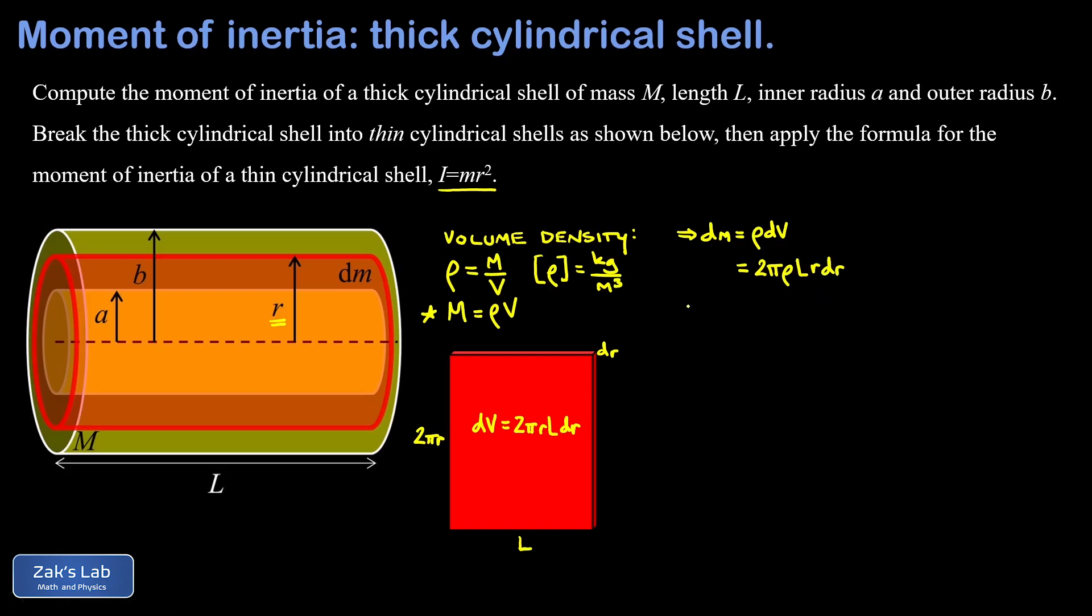Now we're ready to write down the moment of inertia contribution of this one thin cylindrical shell. This is where we appeal to our previous formula for the moment of inertia of a thin cylindrical shell: it's just the mass times the radius squared. The mass is dm and then I have an r² for the radius squared. We just replace dm with the expression above and I get 2πρL r³ dr.